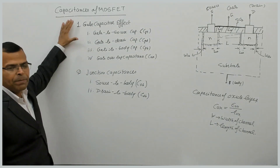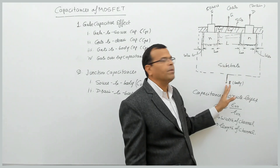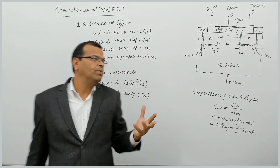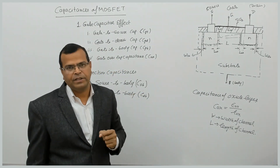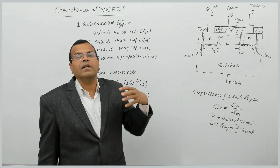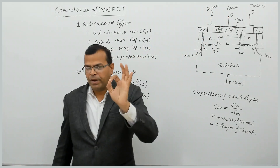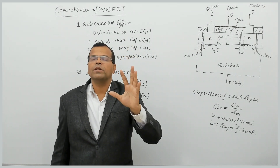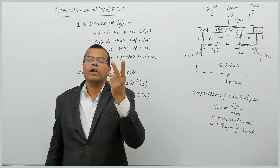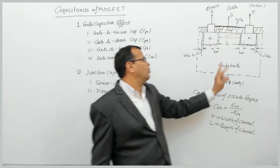MOSFET has four terminals: source, drain, gate, and body. In normal cases, the body terminal is connected with source, but here we study these terminals separately to understand capacitance effects. The different terminals are held at different potentials, which gives rise to capacitances: gate-to-source capacitance, gate-to-drain capacitance, and gate-to-body capacitance.